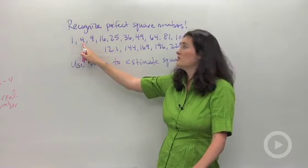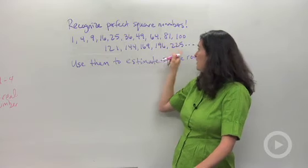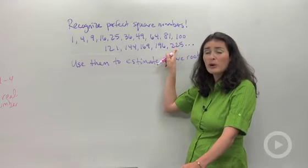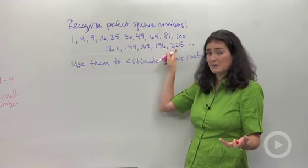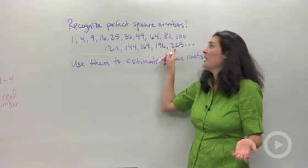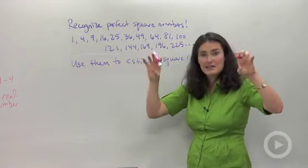This is 1 squared, 2 squared, 3 squared, 4 squared, all the way up to 15 squared. It's important that you guys get really familiar with these numbers, and when you recognize them, something special happens in your head. Like whenever you see the number 49, it should be like, oh, 49, that's 7 squared.